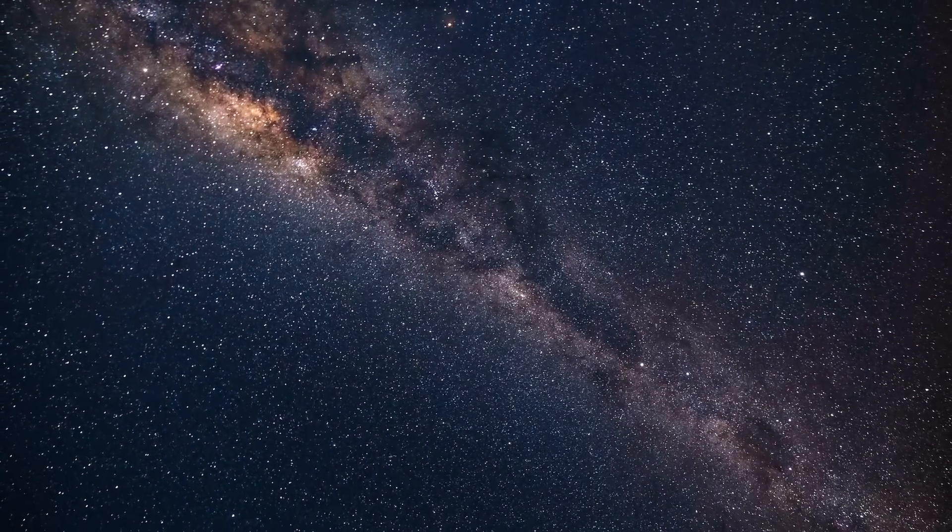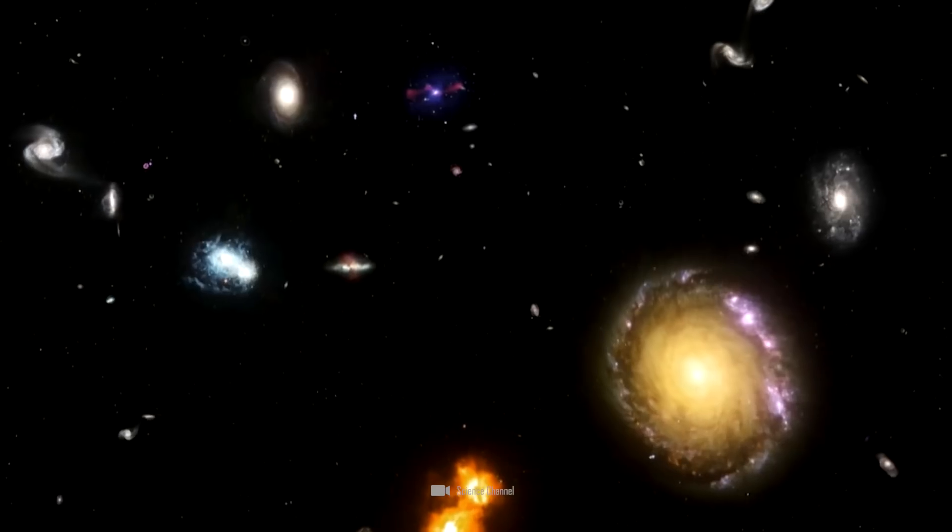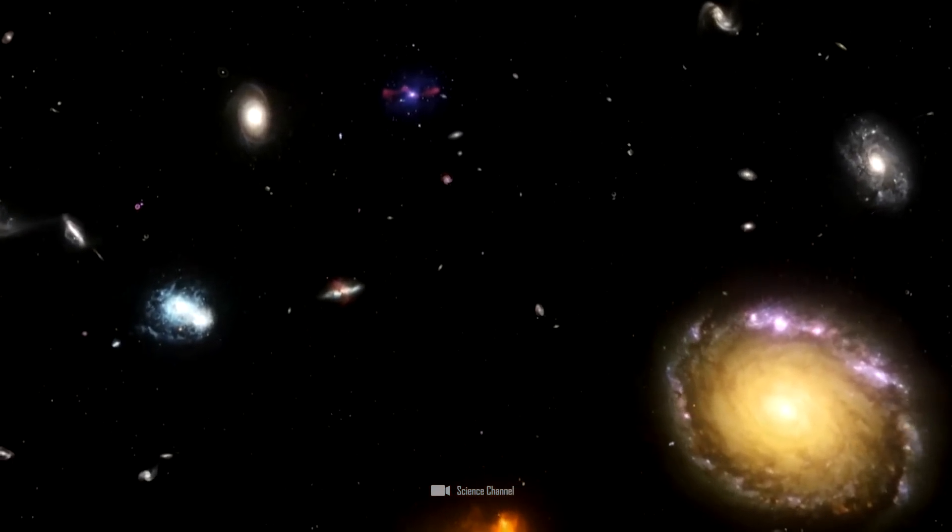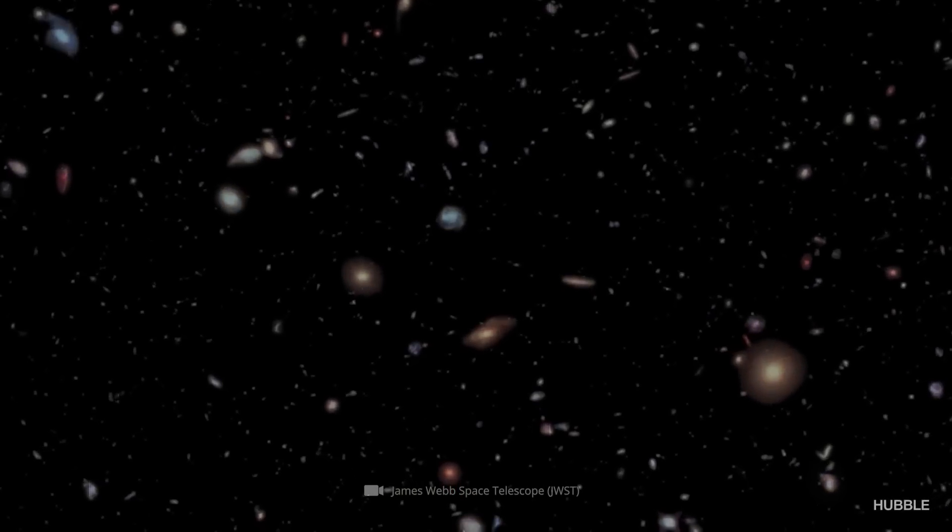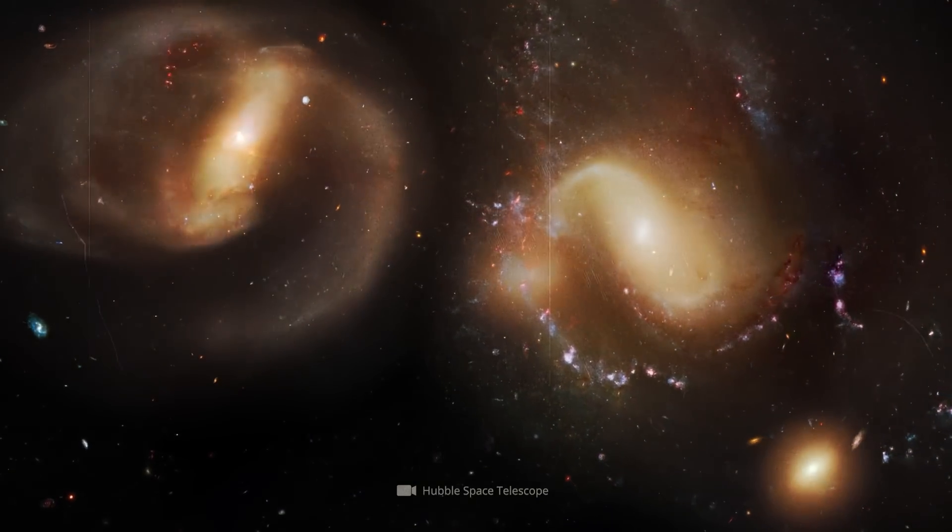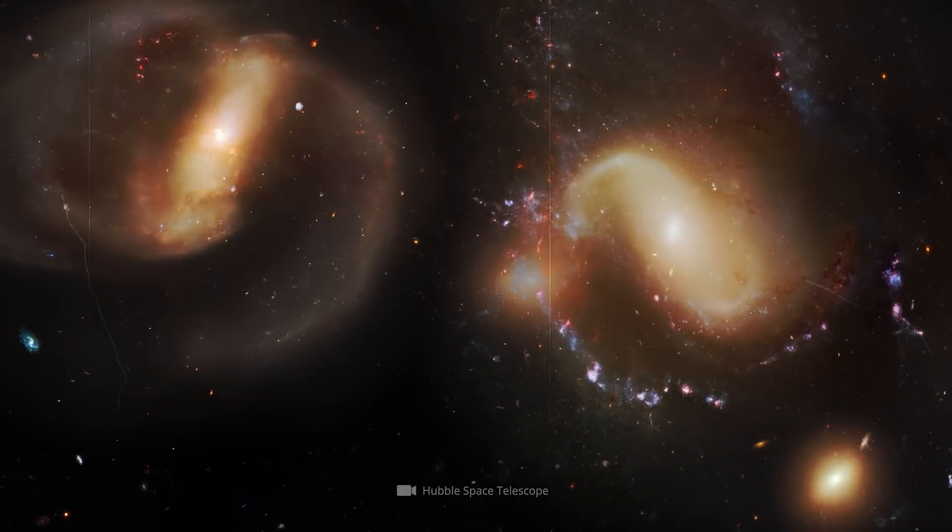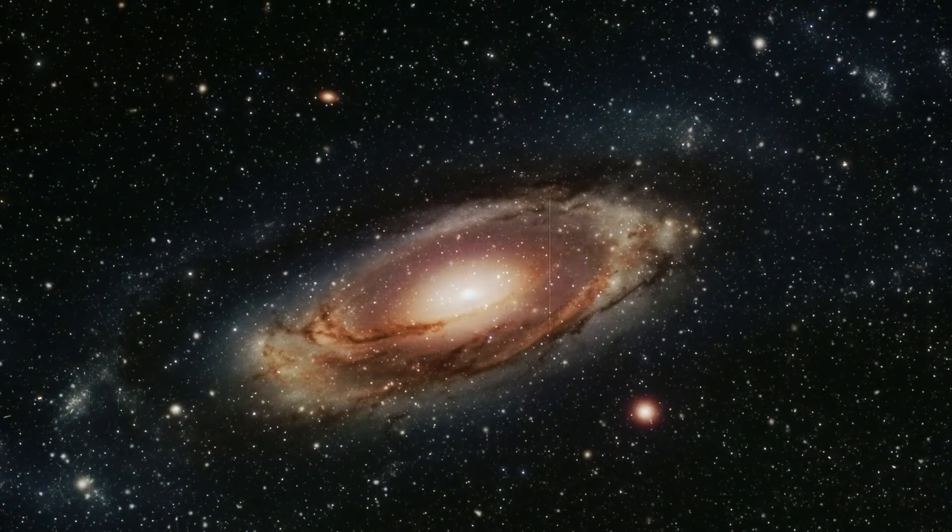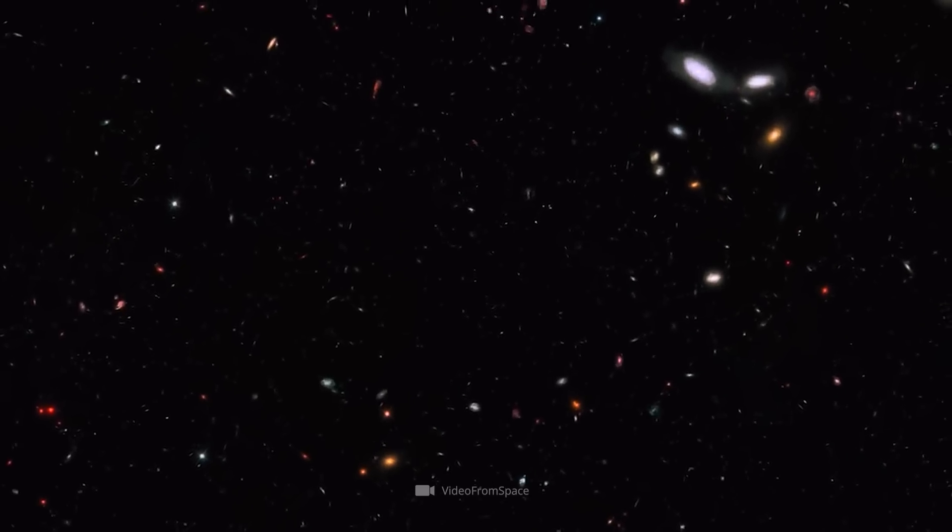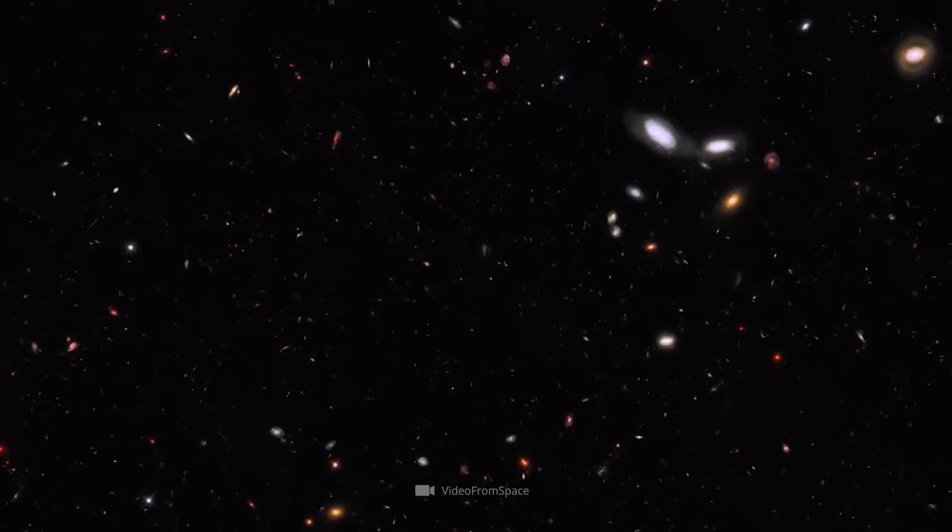It's now considered certain that the universe has been continuously expanding since its birth around 13.8 billion years ago. As a result, the galaxies are also moving away from each other at a speed that is proportional to the distance that separates them. In other words, if galaxy A is twice as far away from Earth as galaxy B, its distance from us is also growing twice as fast.